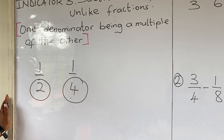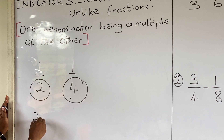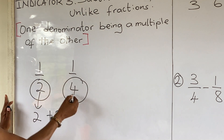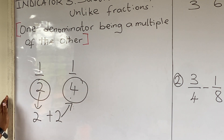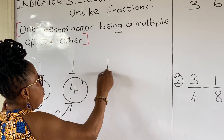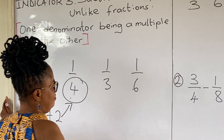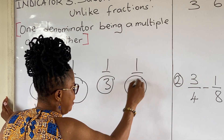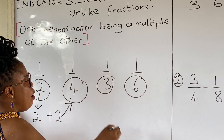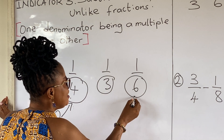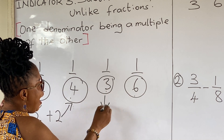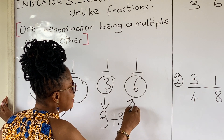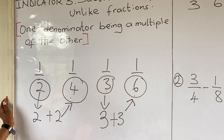Let's look at an example: half and one quarter. All these are two different fractions. They are unlike fractions because their denominators are different. But one denominator is a multiple of the other. Two plus the same two will give you four, so four is a multiple of two. Let's look at another example: one third and one sixth. These are two unlike fractions. The denominators are different, but six is a multiple of three — three added to three gives you six.